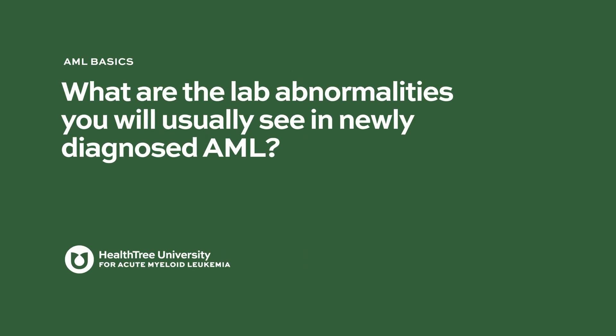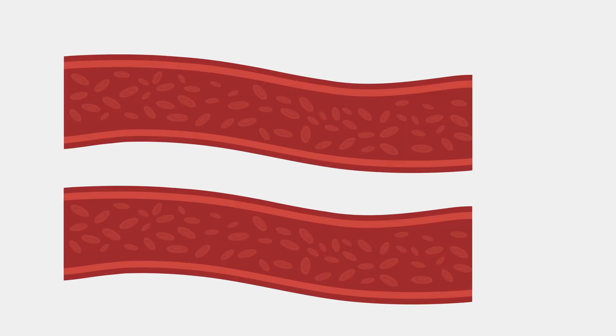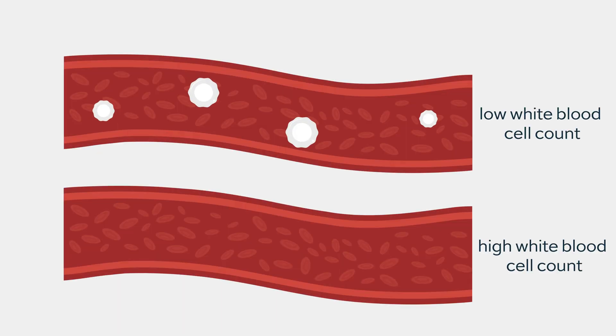What are the lab abnormalities you will usually see in newly diagnosed AML? Typically, leukemia is suspected if there are abnormal blood counts. The white count could be either very low or high.